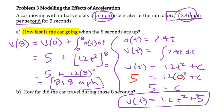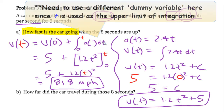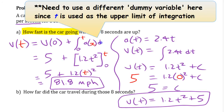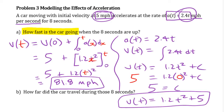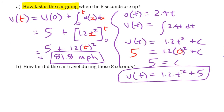We now have an actual algebraic function for velocity. We could have arrived at the same thing in the definite integral approach by leaving the upper limit as t instead of eight, using a dummy variable like x inside the integral — we would have gotten the exact same function: five plus 1.2t².